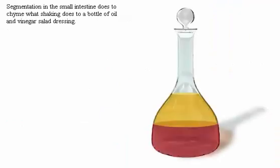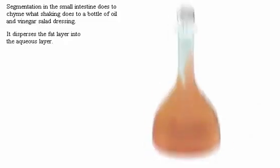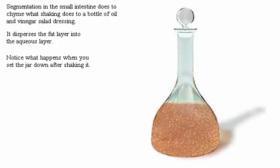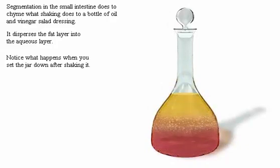Segmentation in the small intestine does to chyme what shaking does to a bottle of oil and vinegar salad dressing — it disperses the fat layer into the aqueous layer. Notice what happens when you set the jar down after shaking it.